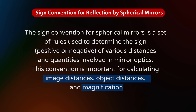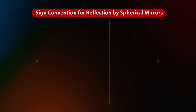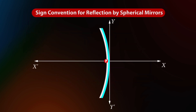This convention is important for calculating image distances, object distances, and to find magnification. Object placement: The object is always placed to the left of the mirror, indicating that the light from the object approaches the mirror from the left side. Distances parallel to the principal axis are measured from the mirror's pole, which is the point where the mirror's surface intersects the principal axis.